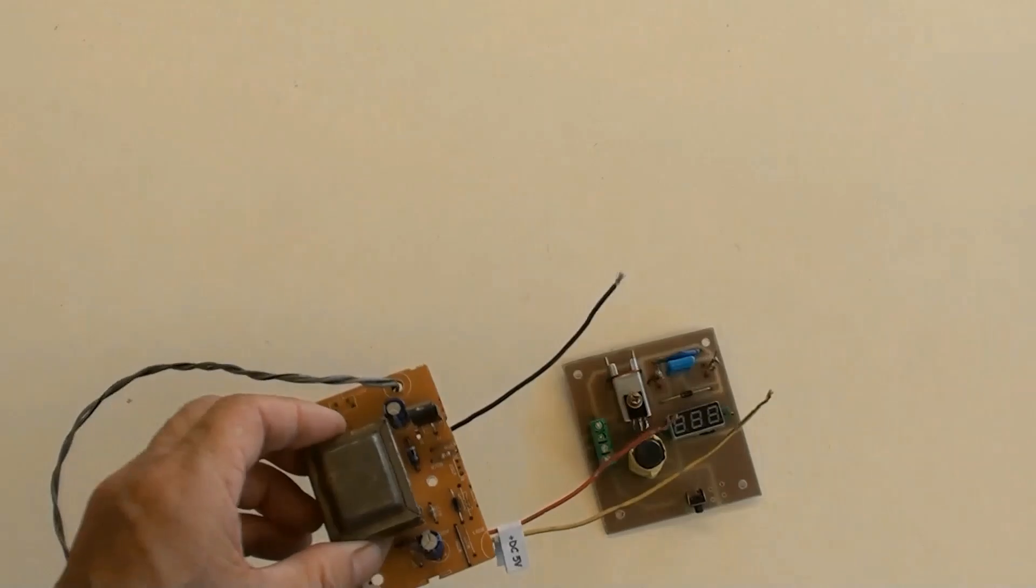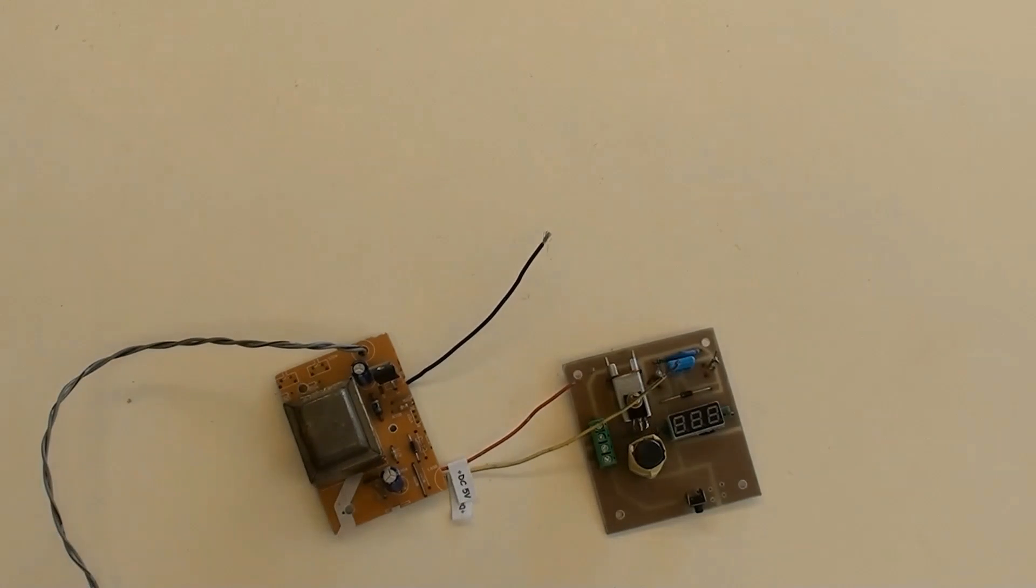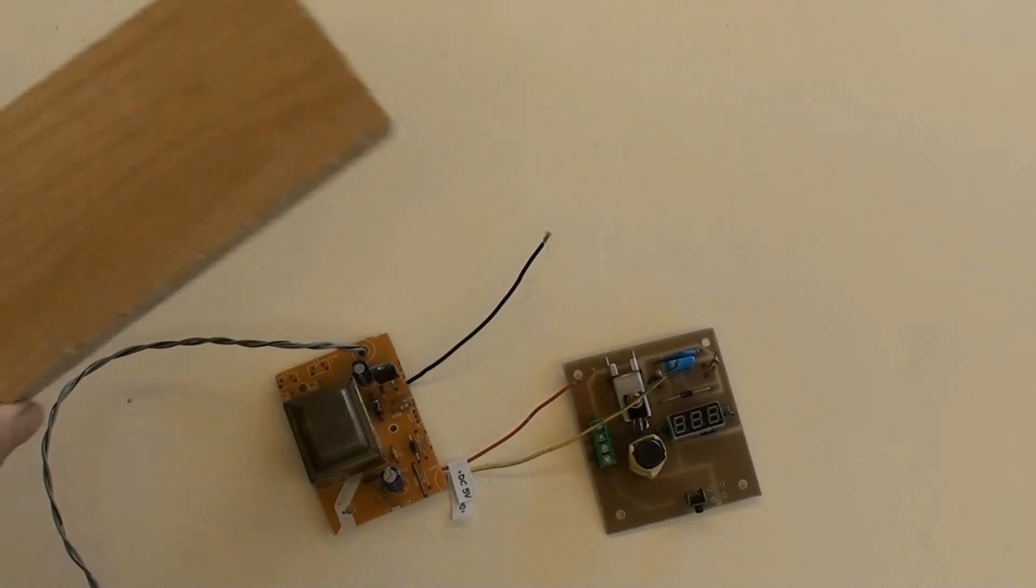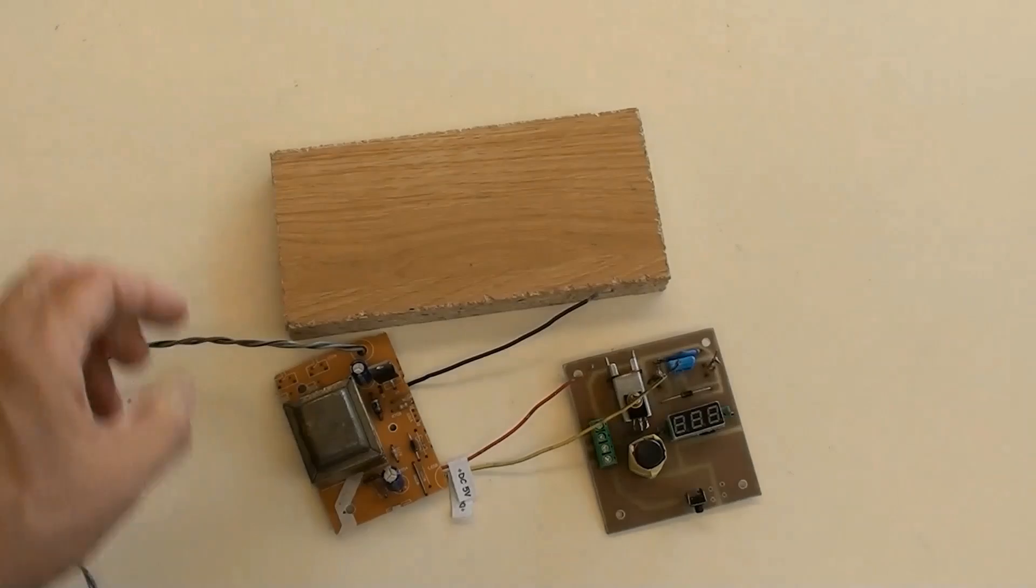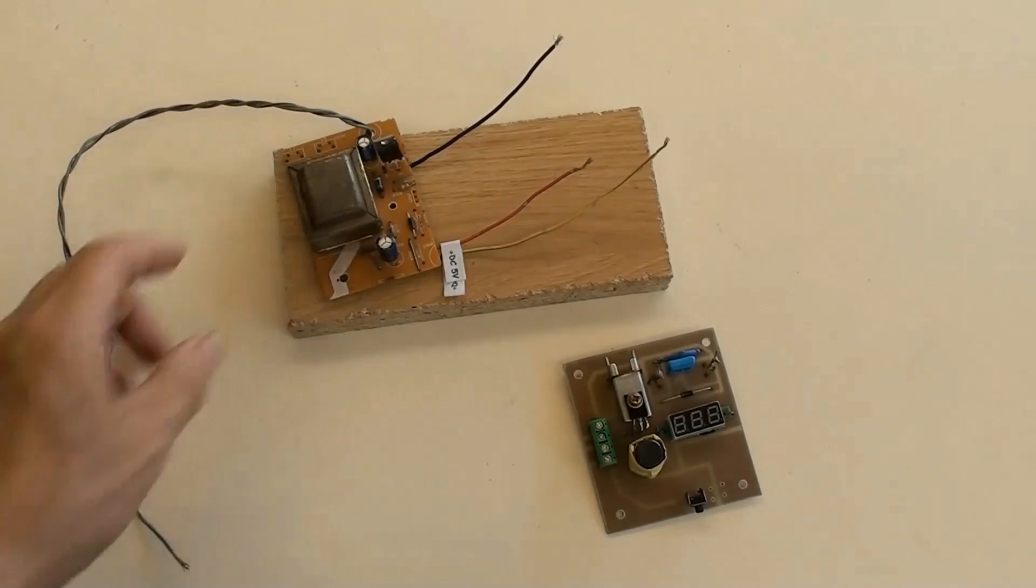This is the AC to DC power supply with PCB together. Put them on a piece of board. Then they will be secured.